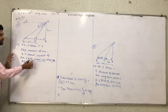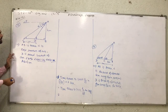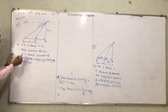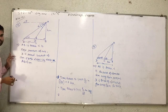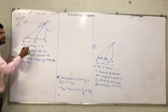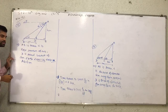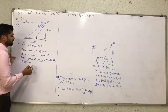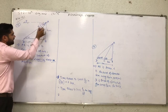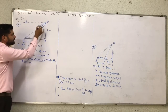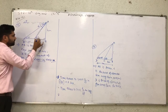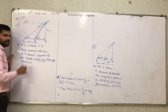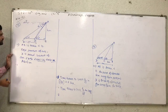So first, angle of depression XAC — both are alternate angles, therefore 30 degrees. In similar fashion, angle XAD — this angle is also similar to alternate angle — XAB is equal to 60 degrees.